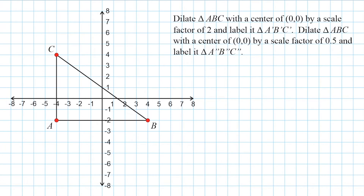In this tutorial, we are going to practice dilating an object on the coordinate plane. We're going to perform two dilations — one is going to stretch our original shape and one is going to shrink it. The problem asks us to dilate triangle ABC with the center of zero, zero by a scale factor of two and label it triangle A prime B prime C prime, and then dilate it by a scale factor of 0.5 and label it triangle A double prime B double prime C double prime.